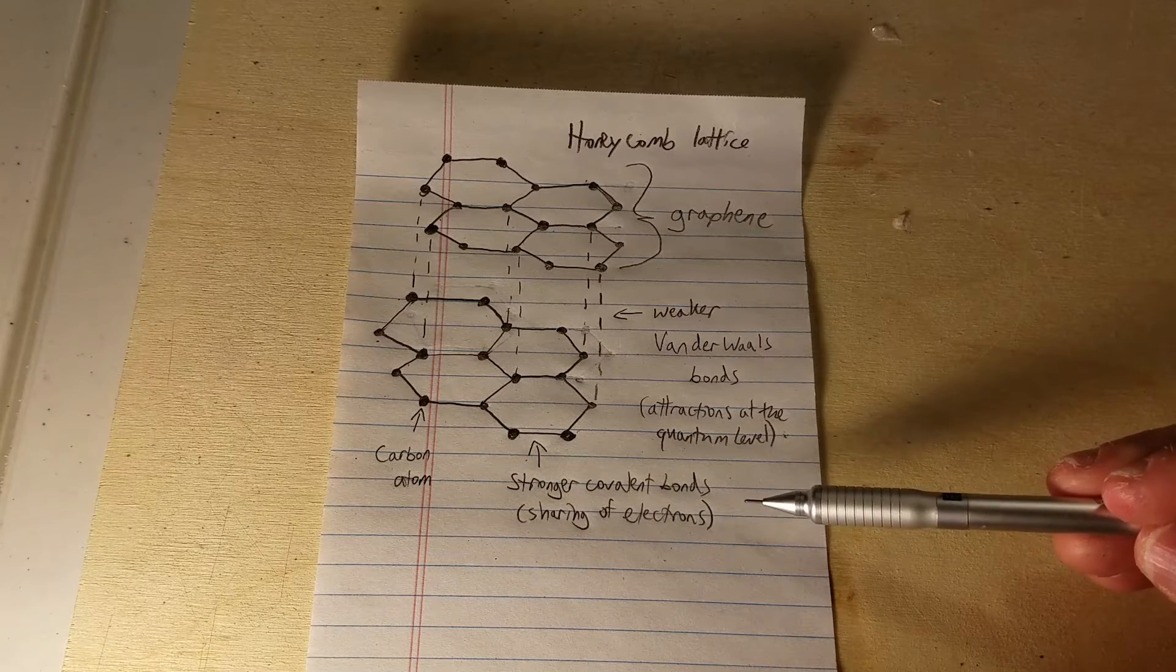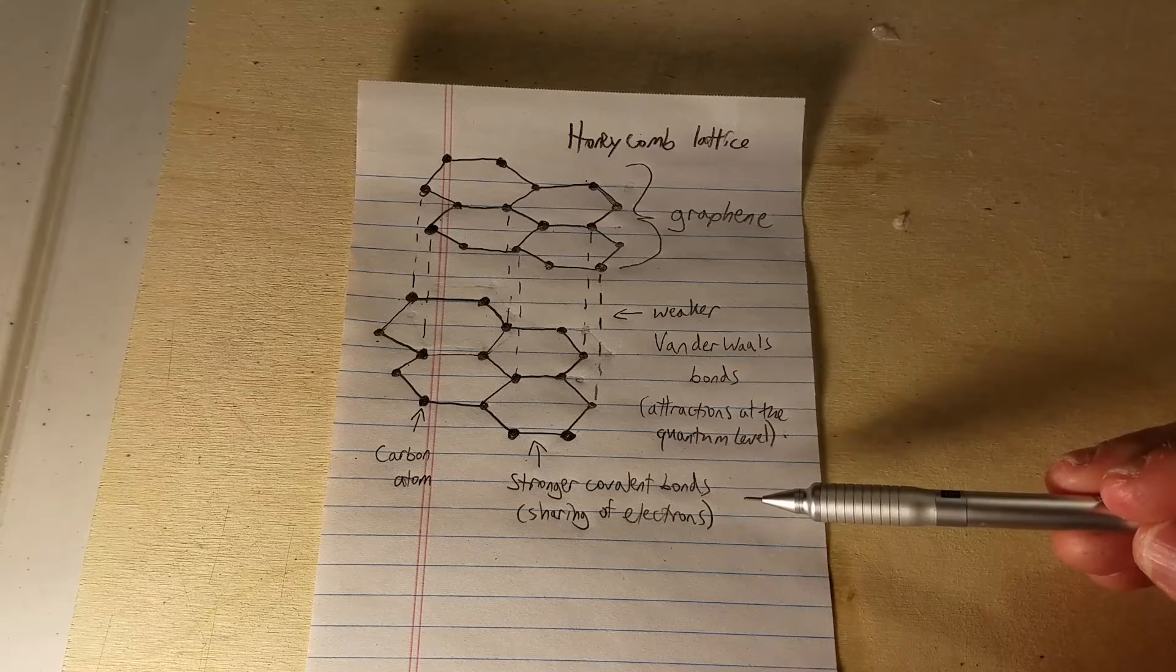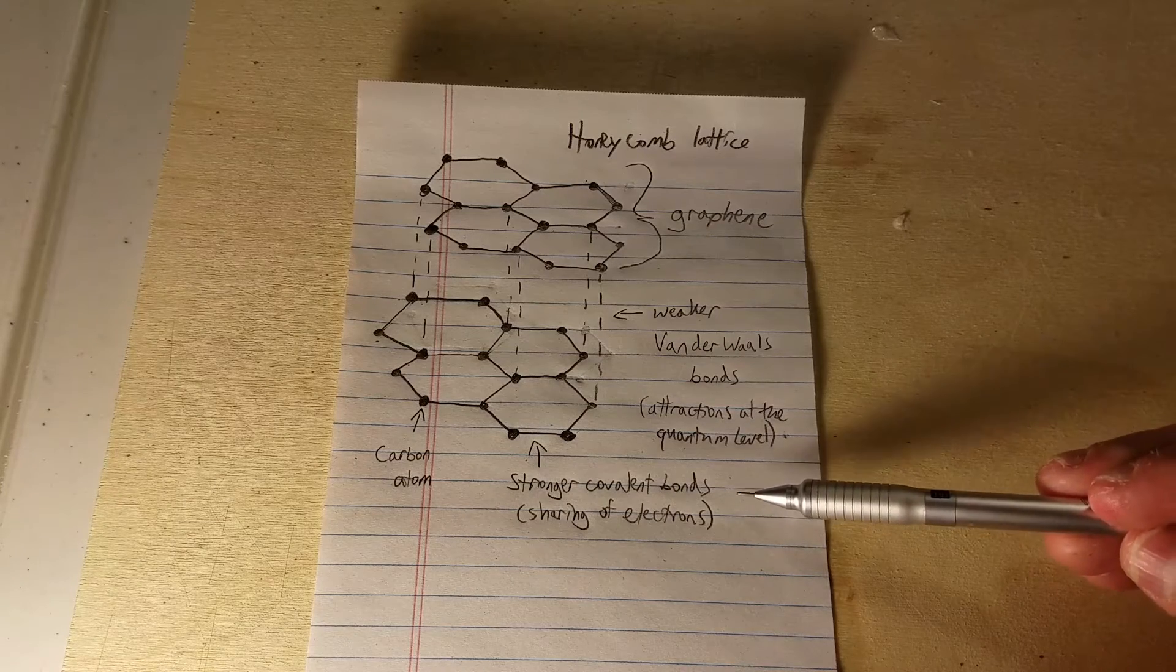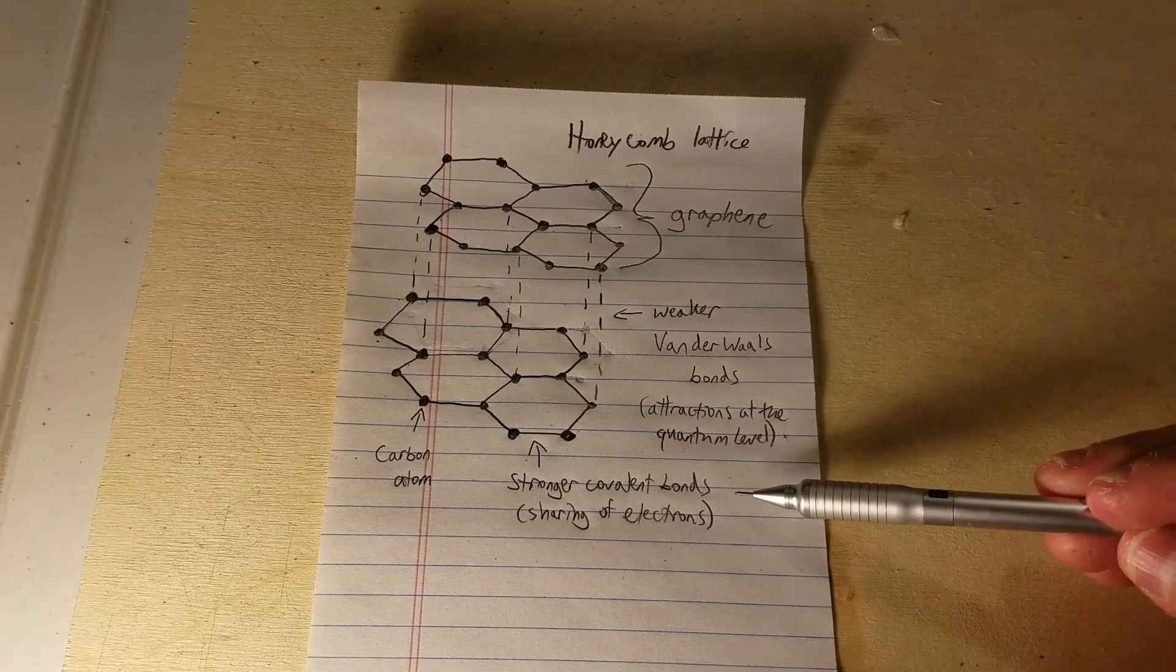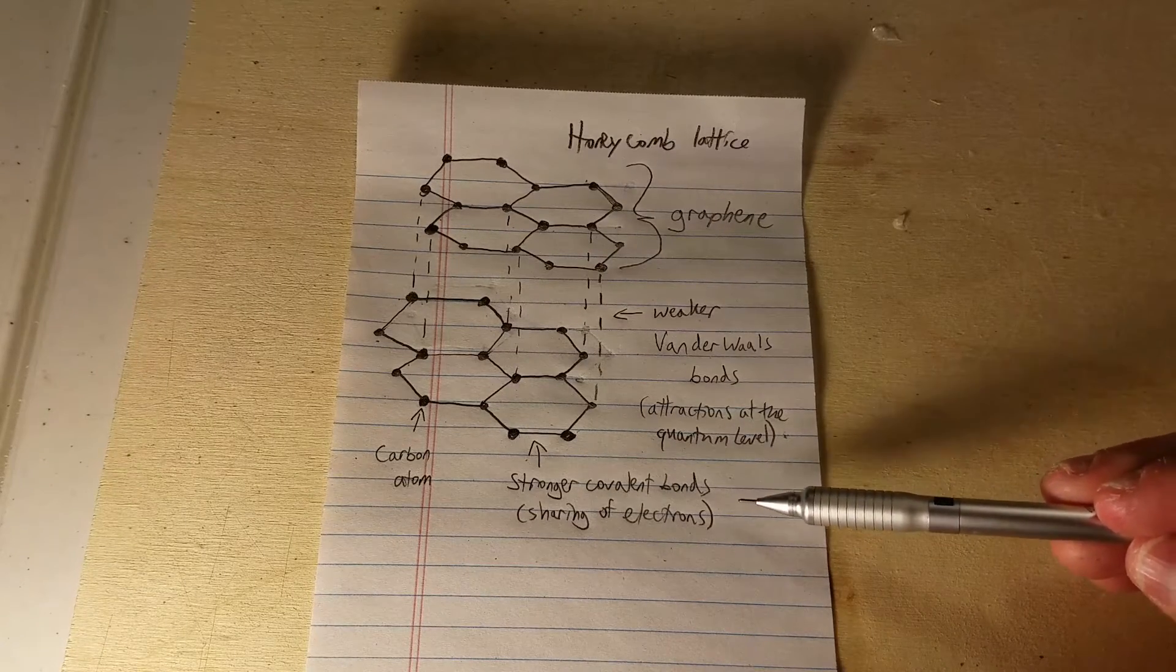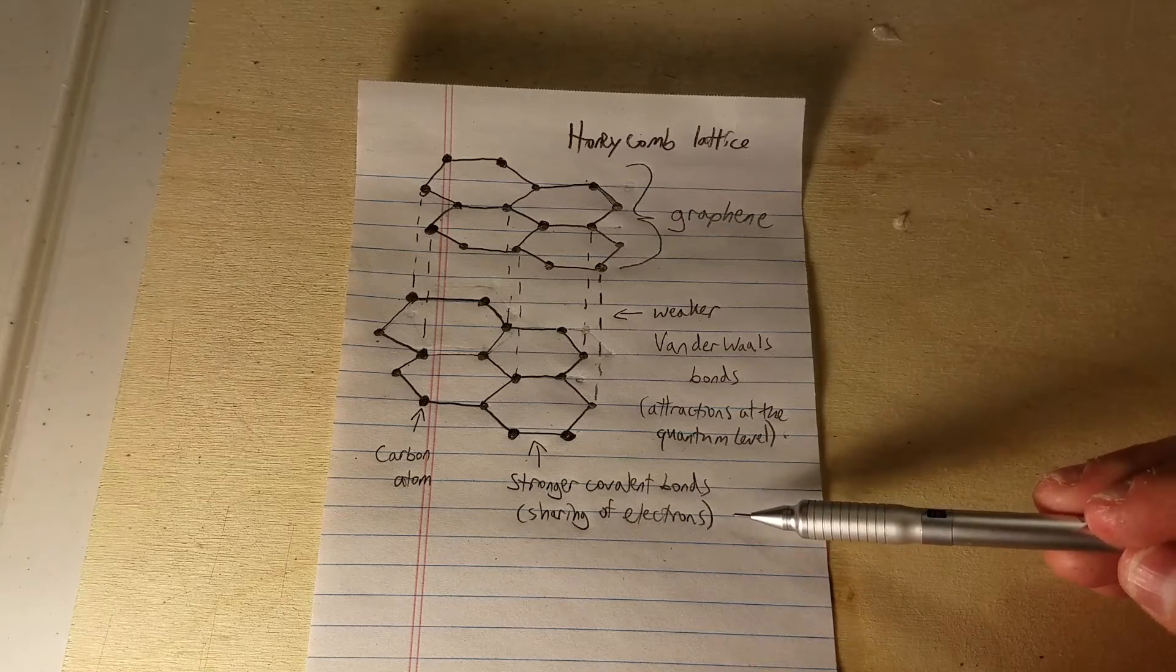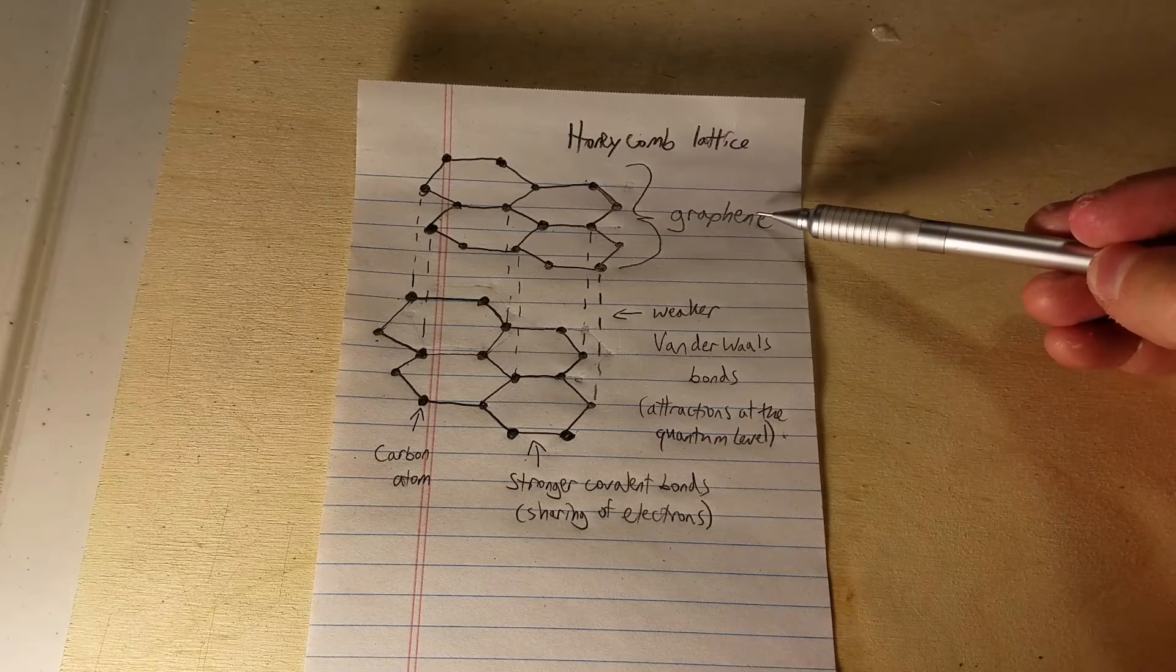In ionic bonds, electrons actually are moving from different parts of the outer layers of atoms to other parts. And that creates a charge difference between atoms, which are now called ions. And then there's an electrostatic attraction between those atoms that have a charge difference. So we have covalent bonds here in graphite, and each layer is called graphene.